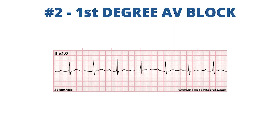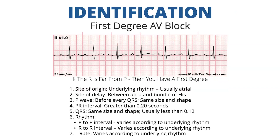Next we have first degree AV block. Basically what you have here is an extended PR interval — the distance between your P wave and your R wave is longer than it's supposed to be. If you're familiar with the heart block poem: if the R is far from the P, then you have a first degree. The site of origin depends on the underlying rhythm. First degree AV block can occur with various rhythms, but they're usually atrial in nature because the P wave indicates the electrical impulse originated somewhere in the atria. The site of delay is between the atria and the bundle of His.